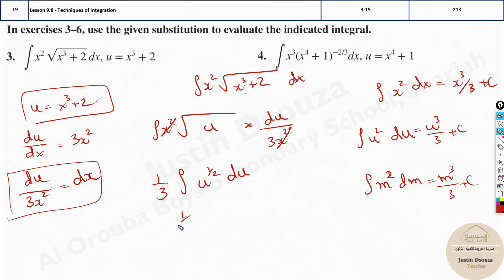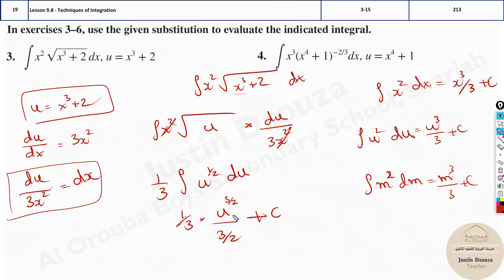Now just use the power rule: one-third multiplied by u to the power (half plus 1). Half plus 0.5 equals 1.5, which is 3/2. So it becomes (1/3) times u to the power 3/2, divided by 3/2, plus c.